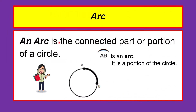An arc is the connected part or portion of a circle. We have arc AB, which is a connected part or portion of a circle.